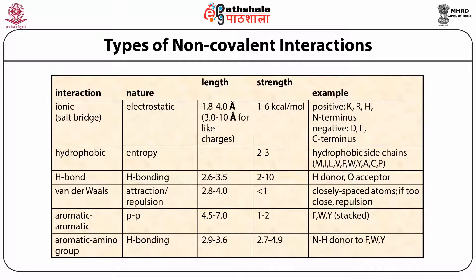Hydrogen bonding exists at 2.6-3.5 Å with bond energy of 2-10 kcal/mol, based on hydrogen bond donors and acceptors. Van der Waals interactions may be either attractive or repulsive depending on distance; although the energy per interaction is very low, the number of van der Waals interactions in a protein is very high. Other rare interactions include aromatic pi-pi stacking and aromatic amino group hydrogen bonding.